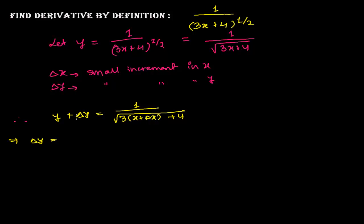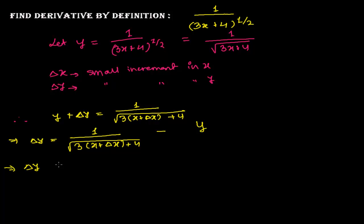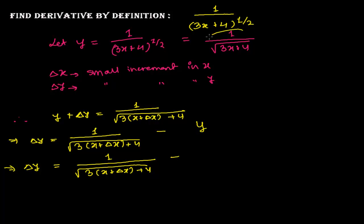Whenever we find the derivative by the first principle method, we write δy on one side and everything else on the other. So δy equals 1 over √(3(x + δx) + 4) minus y, and in place of y I substitute 1 over √(3x + 4).